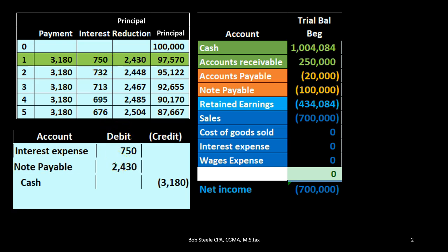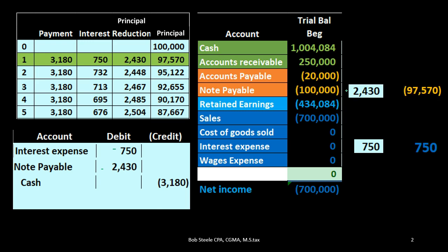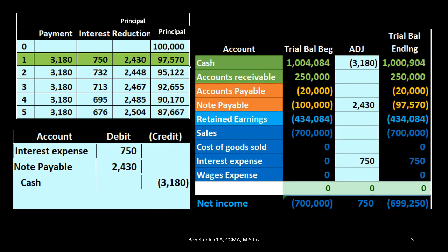So we break it out between interest and principal. When we post this, interest expense starts at zero and goes up by $750 — that's like the rent on the money, over and above the initial principal, paid for the use of the money. The note payable decreases by the principal component to $97,570, which matches our amortization table. Cash decreases as well. The principal component brings the loan down to what it should be on the amortization table after the first payment.